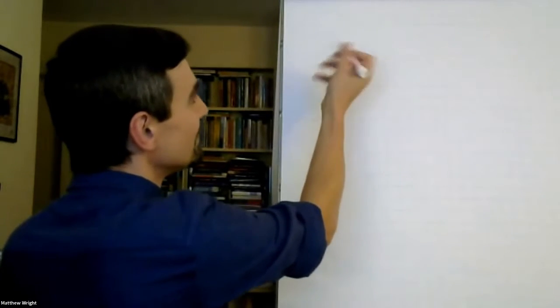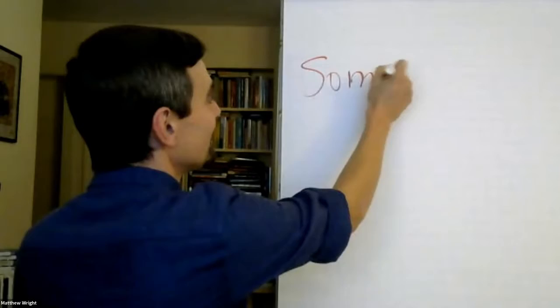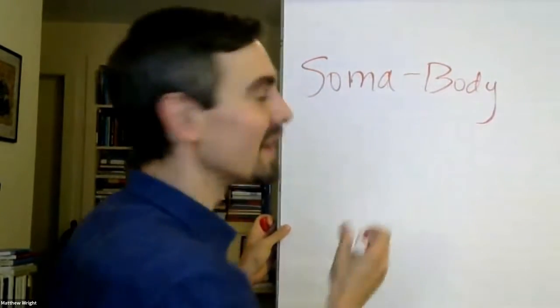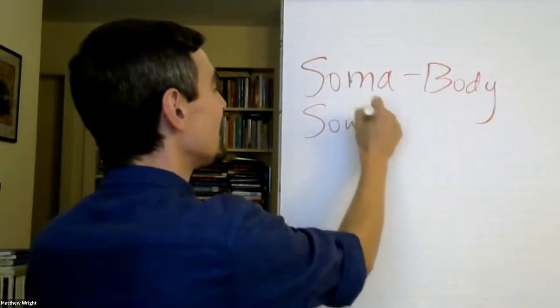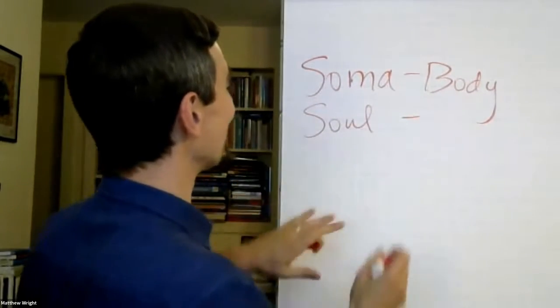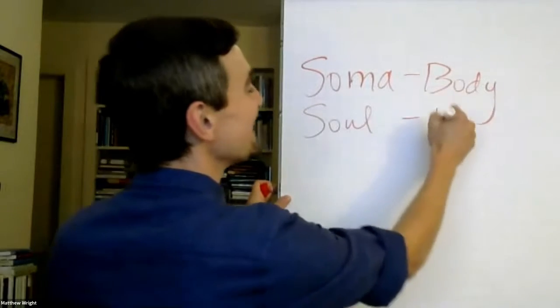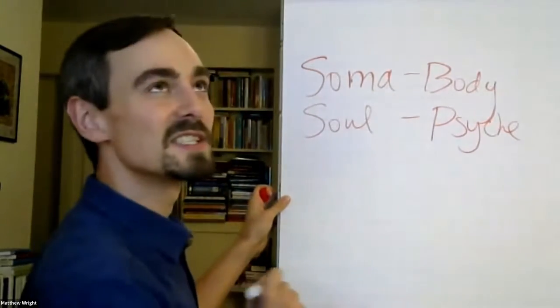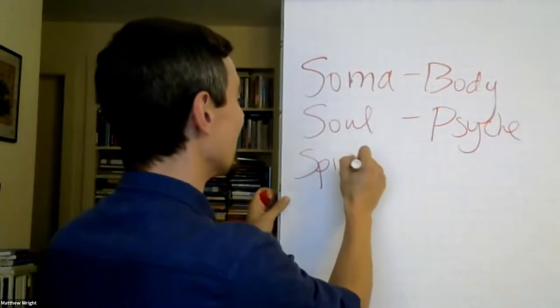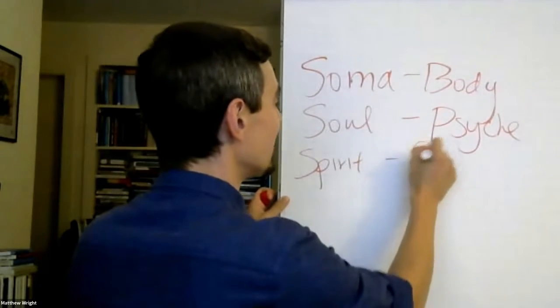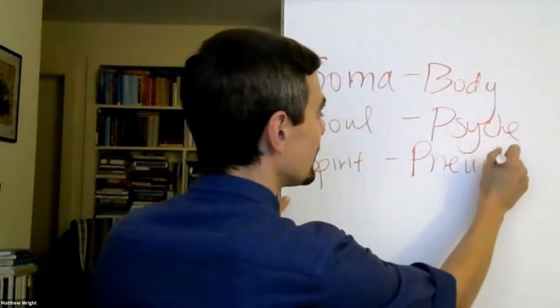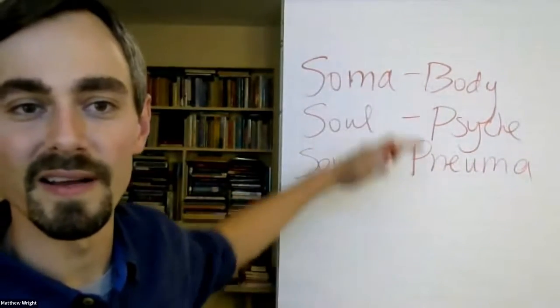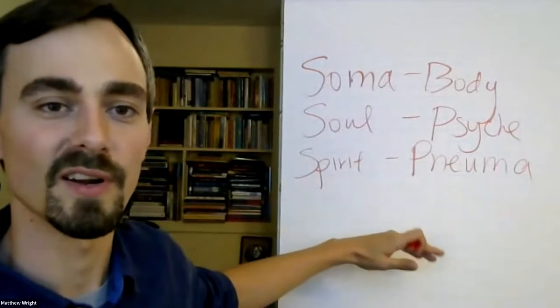body is soma. Soul is, oh, I've got my languages backwards. Soul is psyche. And spirit is pneuma. So soma, psyche, pneuma are the layers of the human person, according to St. Paul.